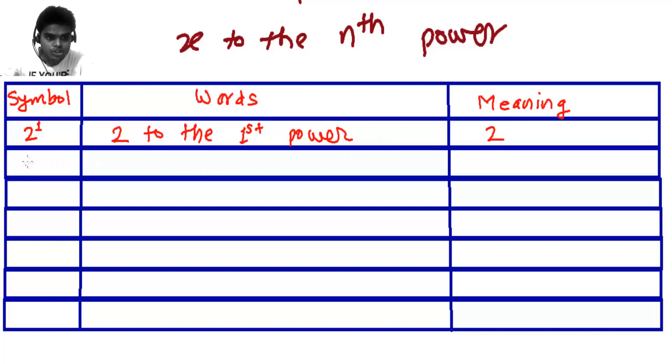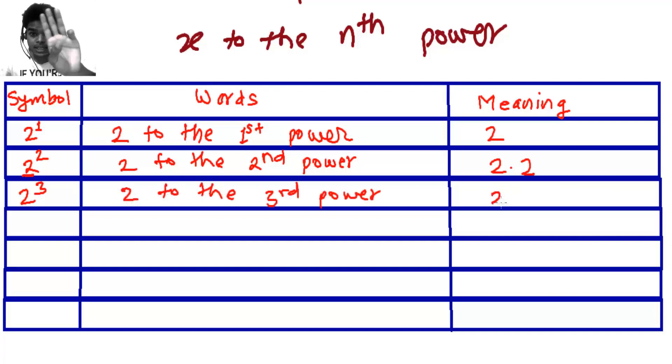Now let's go 2 to the 2nd power. 2 to the 2nd power - you can write second like that also. This means this base 2 is multiplied by itself 2 times, so it's like 2 times 2. The factor is 2. Now 2 to the 3rd power - 2 times 2 times 2, 3 times.